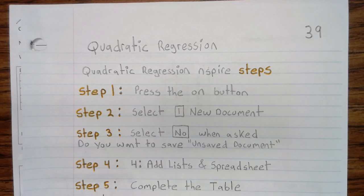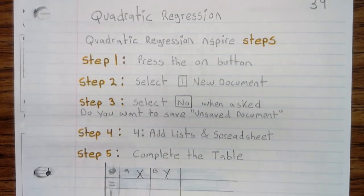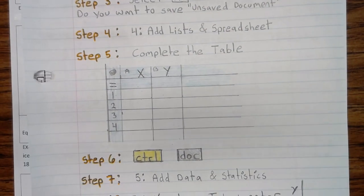Step 1: Press the On button. Step 2: Select number 1, New Document. Step 3: Select No when asked, Do you want to save unsaved document? Step 4: Add list and spreadsheets. Step 5: Complete the Table.